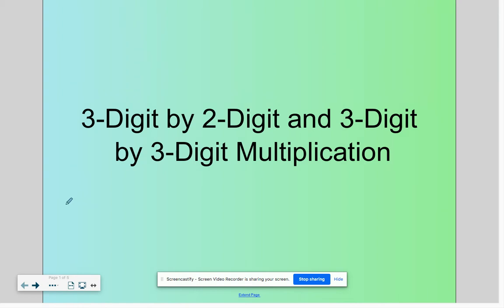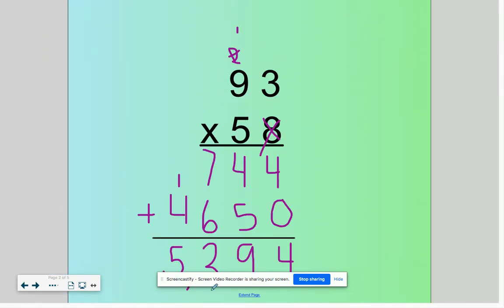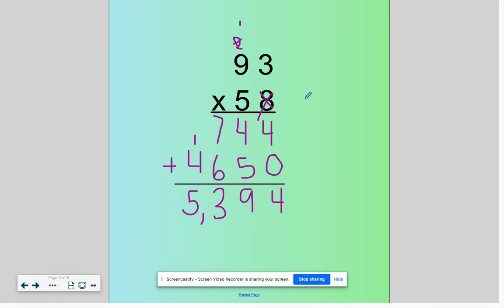Good morning. Today we're going to practice 3-digit by 2-digit and 3-digit by 3-digit multiplication. Let's start with this first problem here. We're multiplying 93 times 58.